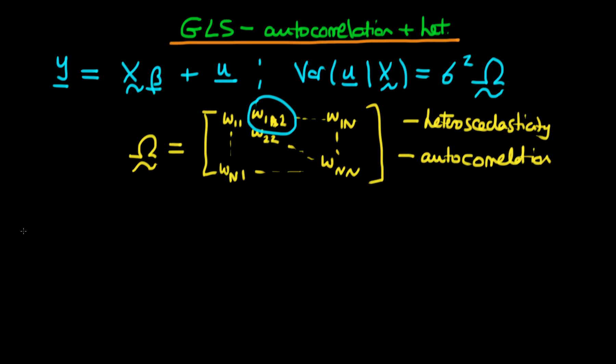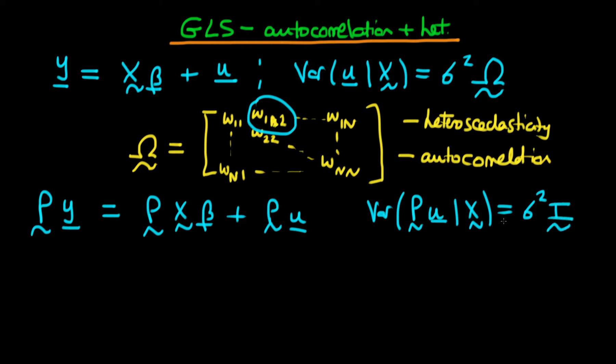But we're going to proceed exactly as we did before. We're going to assume that there is some sort of transformation, P, which we're going to apply to both sides of our original equation. So that's P Y is equal to P X times beta plus P U. And what we're going to assume is that the variance of our transformed error, so the variance of P U given X, is going to be equal to sigma squared times the identity matrix. So on our transformed system, we're going to assume that we both have homoscedastic errors and that there is no autocorrelation in the errors.